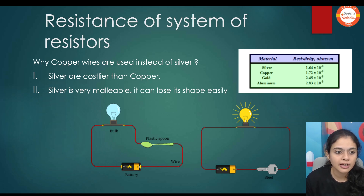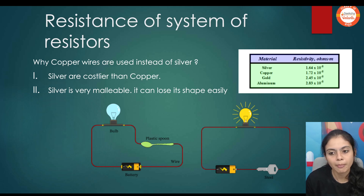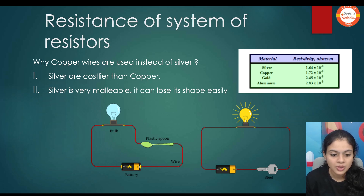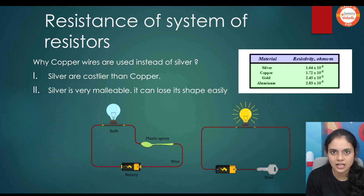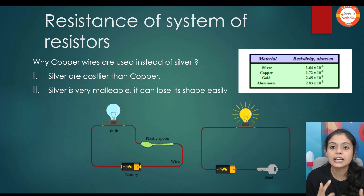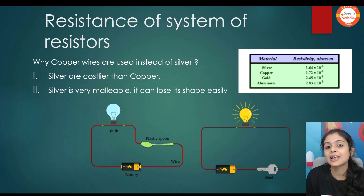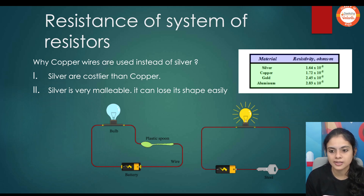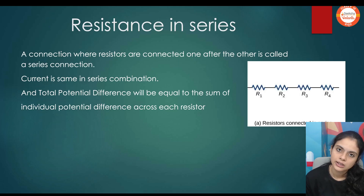There may be a question: why are copper wires used instead of silver? Silver has less resistivity compared to copper, so we could use silver wires everywhere — but why don't we? Because copper is cheaper than silver. Also, silver loses its shape when current flows through it, as it becomes ductile with a slight increase in temperature. Hence we use copper wires in connections.